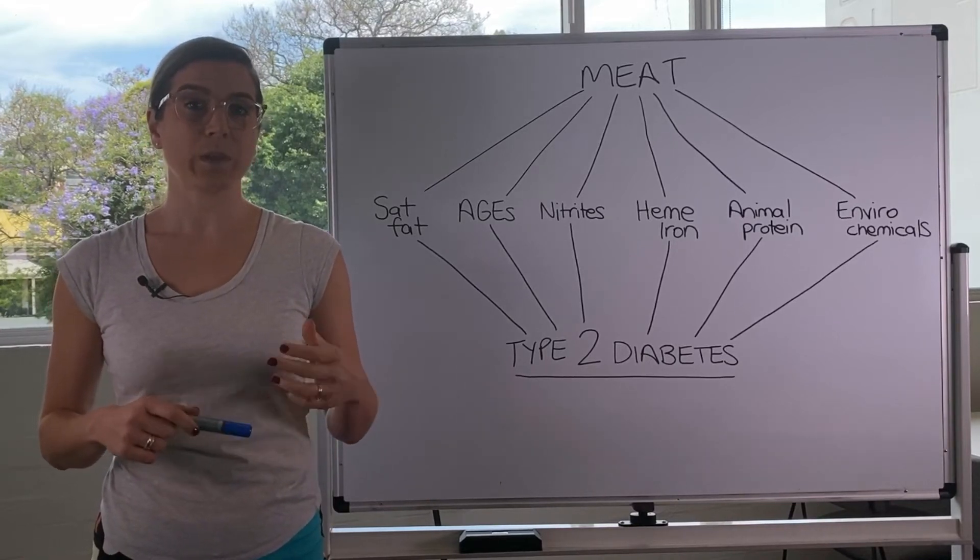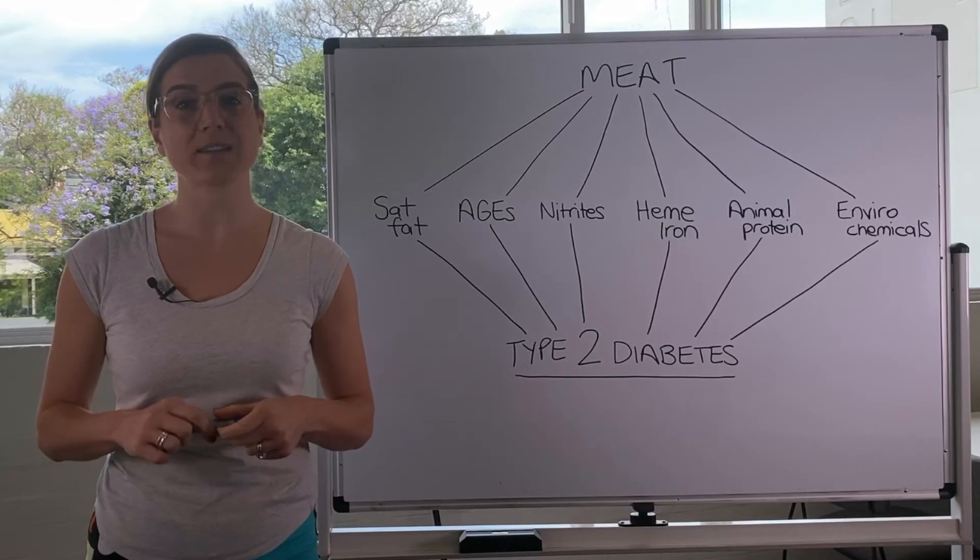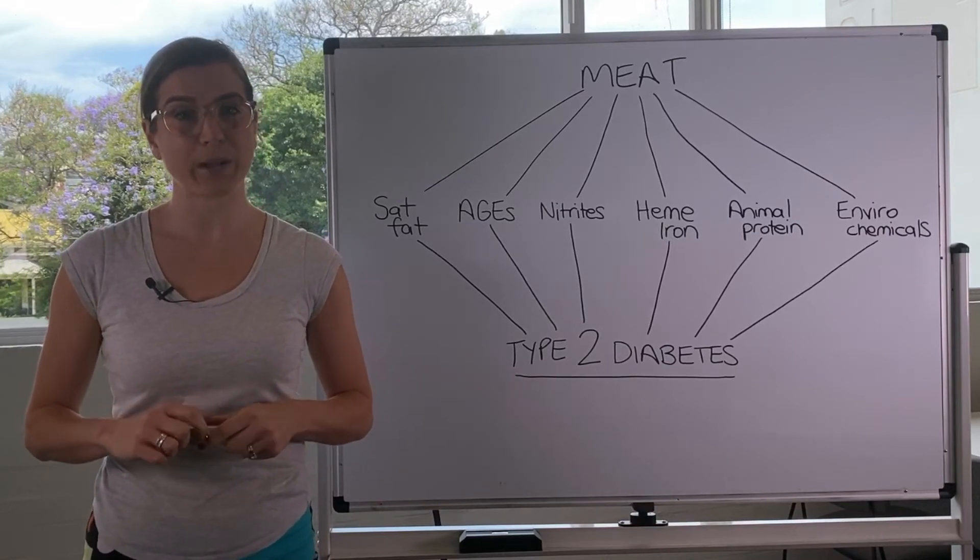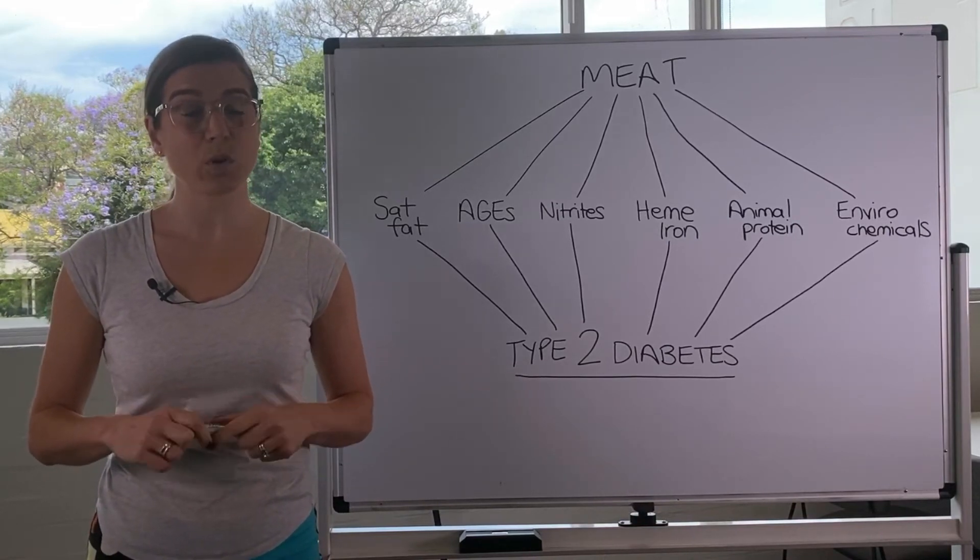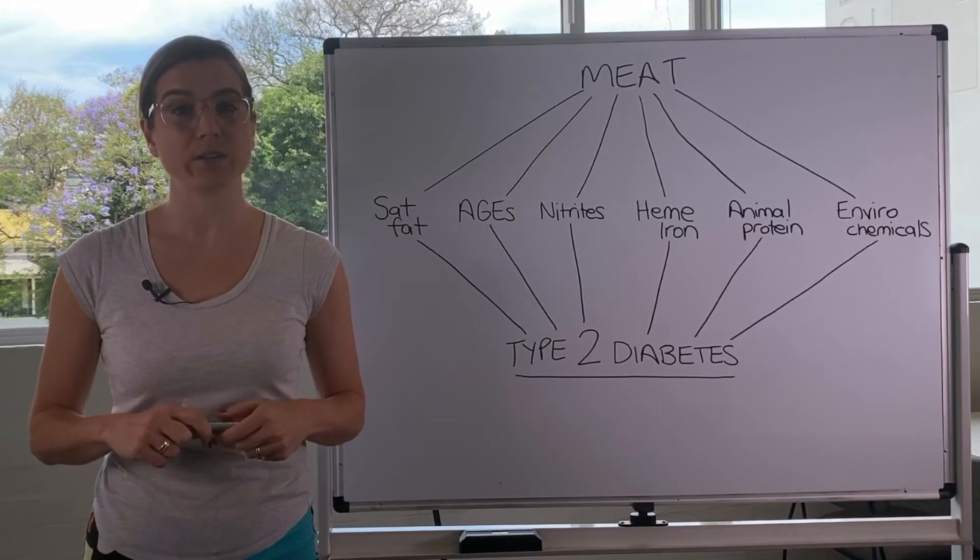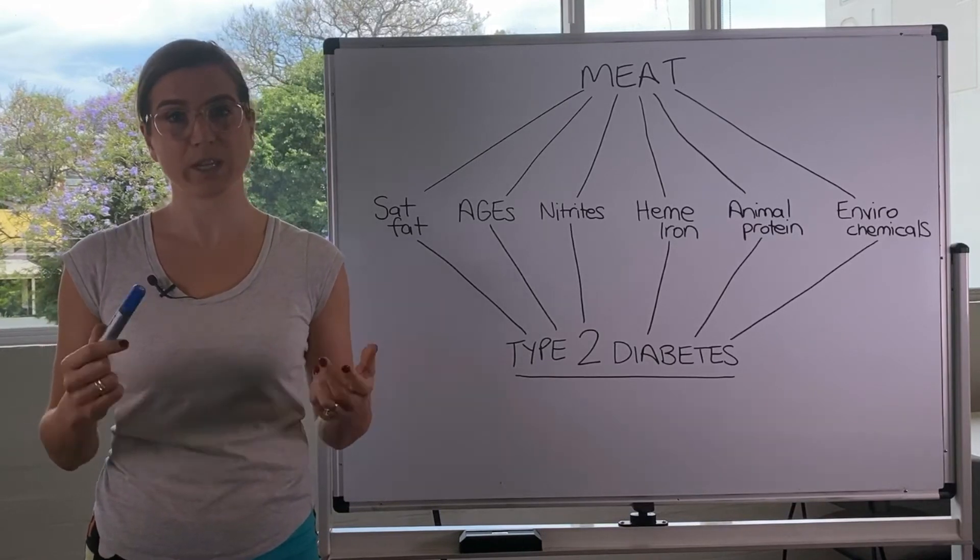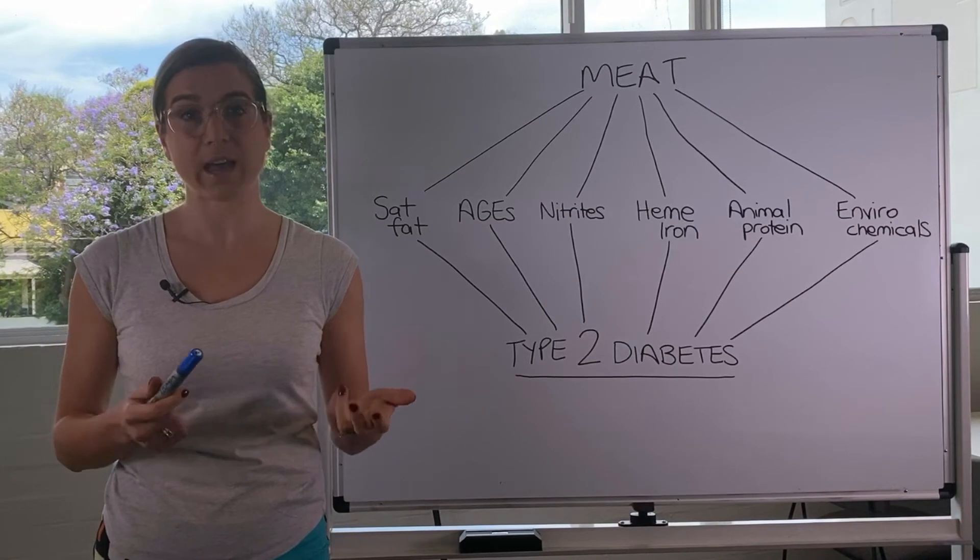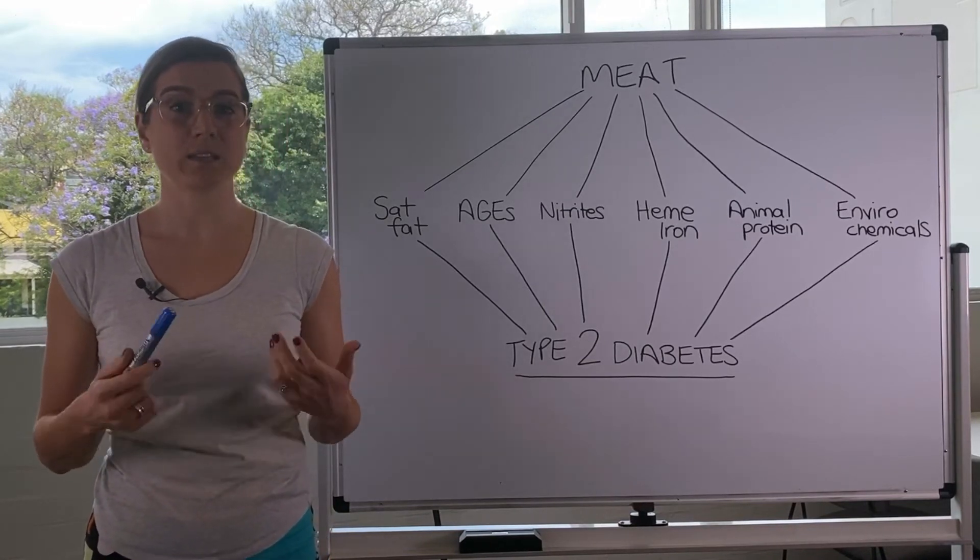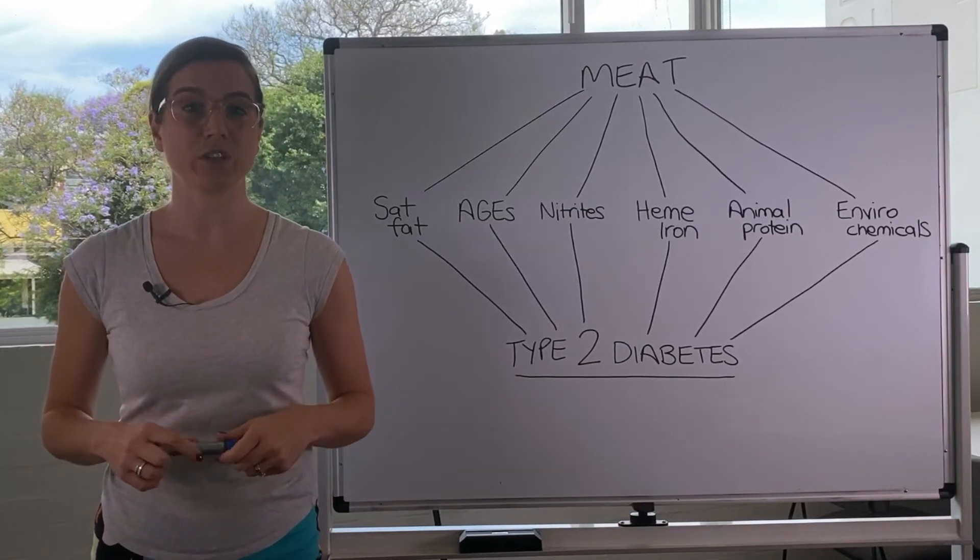So people who eat the highest levels of animal products have the highest levels of what we call intramyocellular lipids, which again is just a technical name for fat in your cells. And this contributes significantly to insulin resistance.